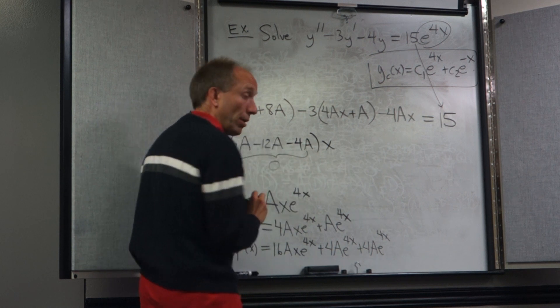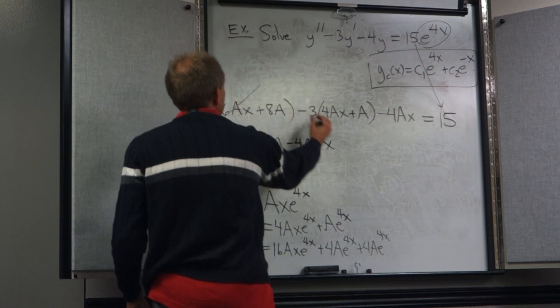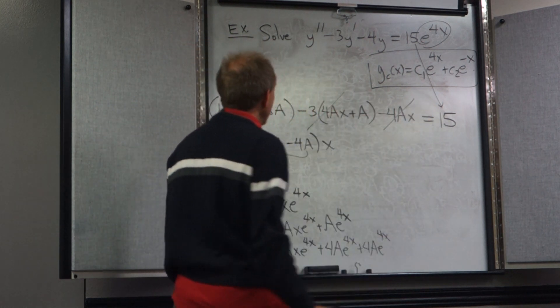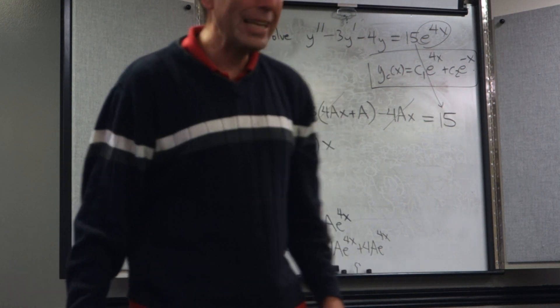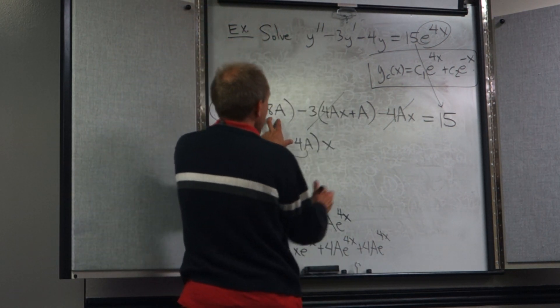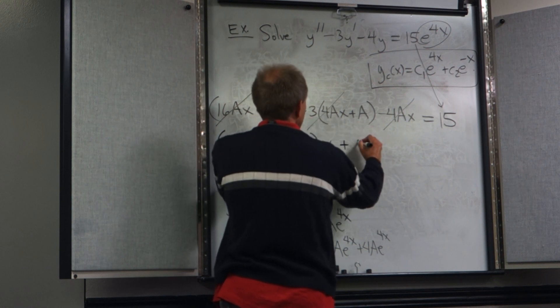Notice that this is just 0. So this term, this term, and this term are just canceling out completely. What I'm left with is 8a minus 3a.